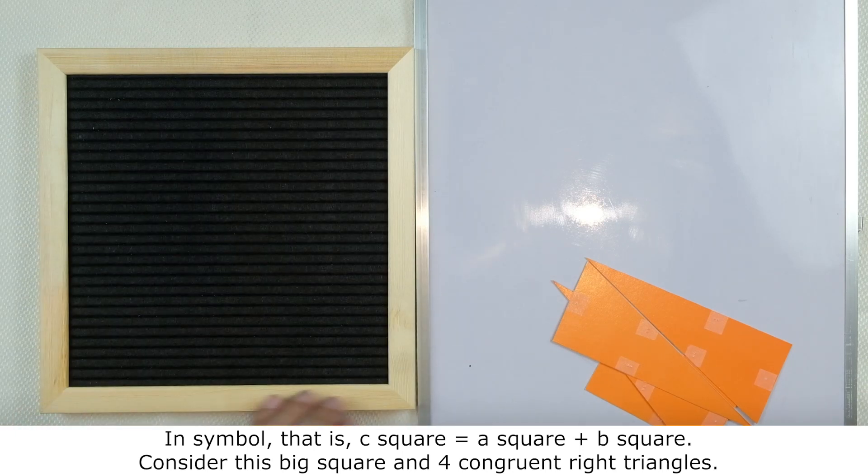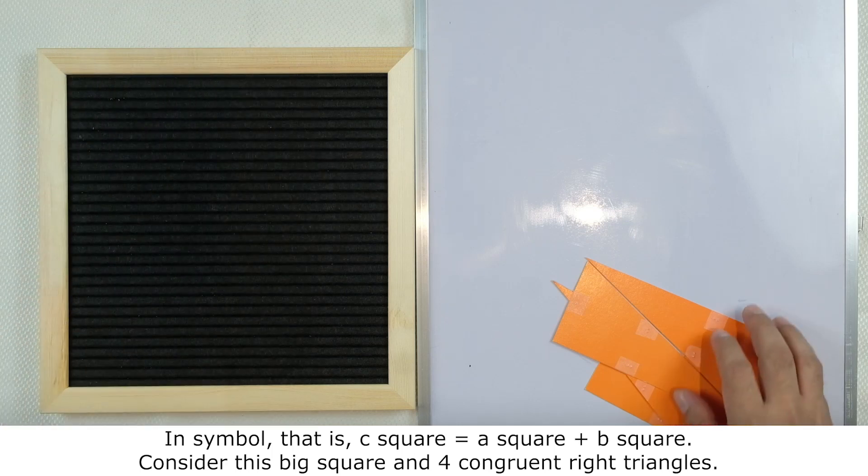Consider this big square and these four congruent right triangles.